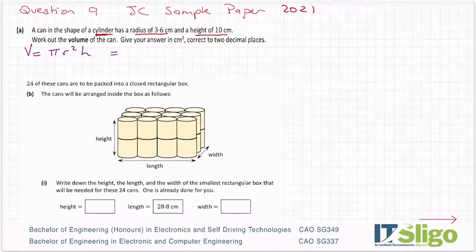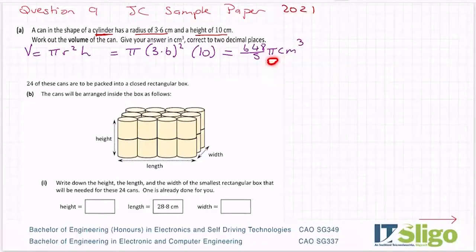So it's equal to π, my radius is 3.6 squared, and my height is 10. Grab your calculator. Does it say in terms of π? No, it says two decimal places. So that's π by 3.6 squared by 10. I'm getting 648/5 π cm³. If the answer says in terms of π, I would have left it like this. That just means they haven't multiplied the 3.14 by 648/5. But they don't want it in this instance. They want it to two decimal places. So 407.15 cm³ is the volume of one of those cans.